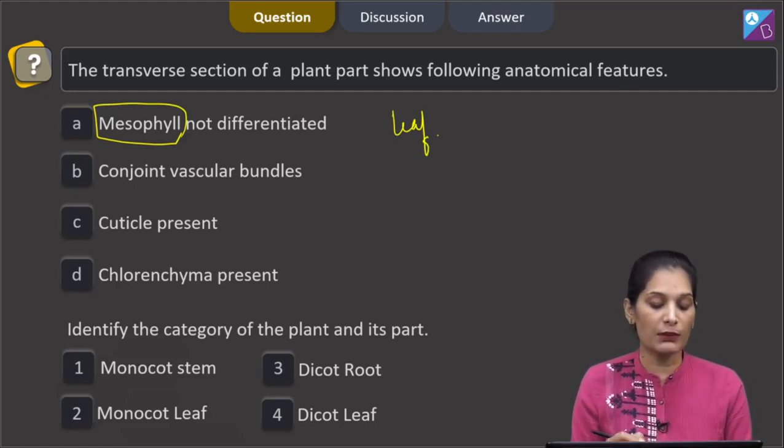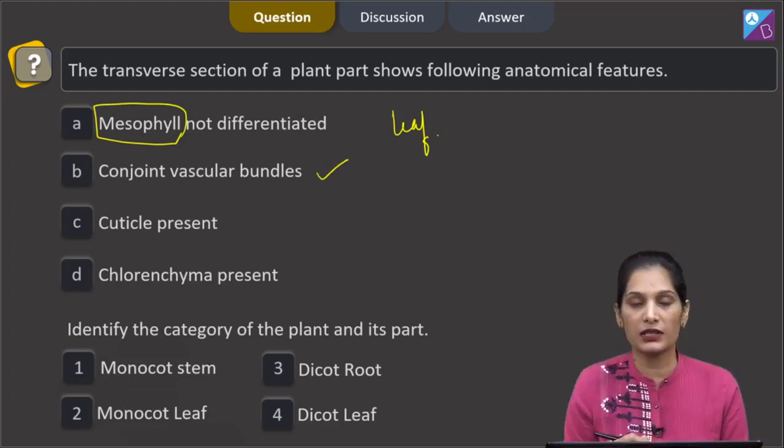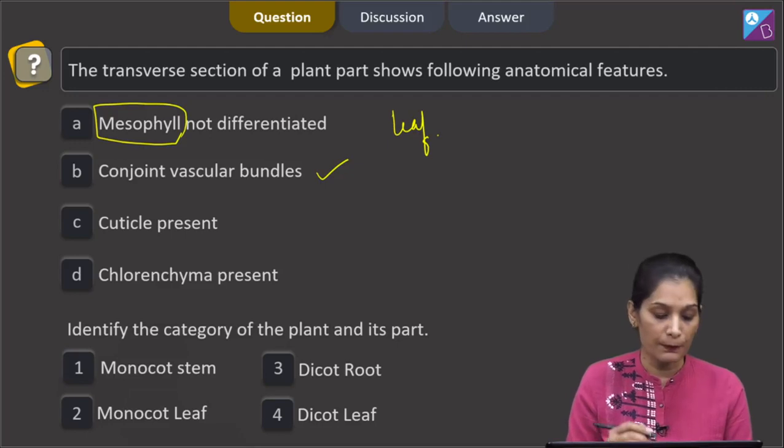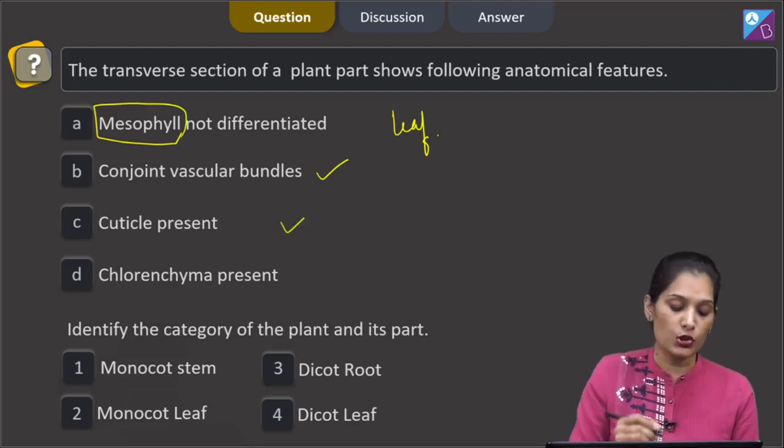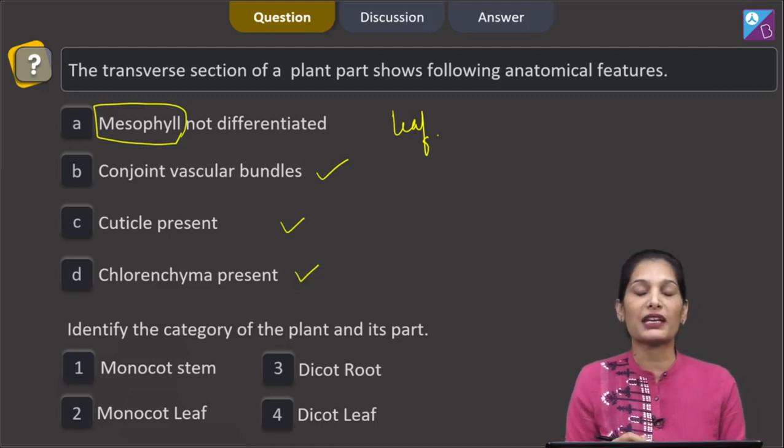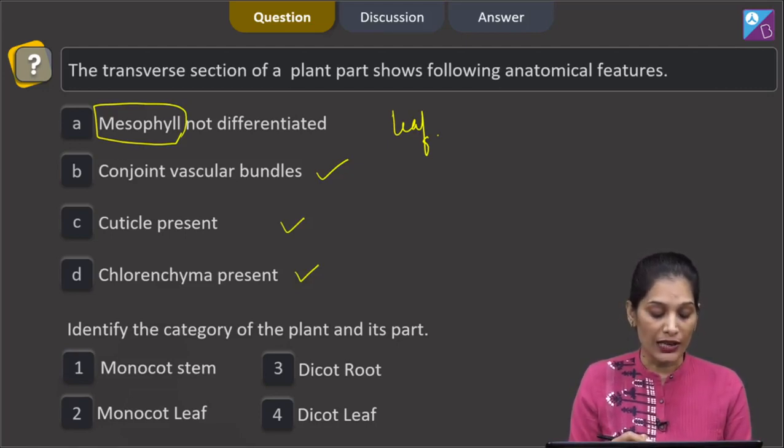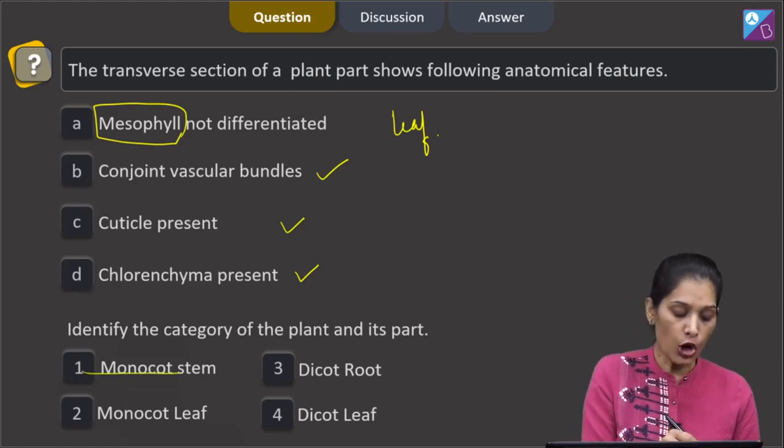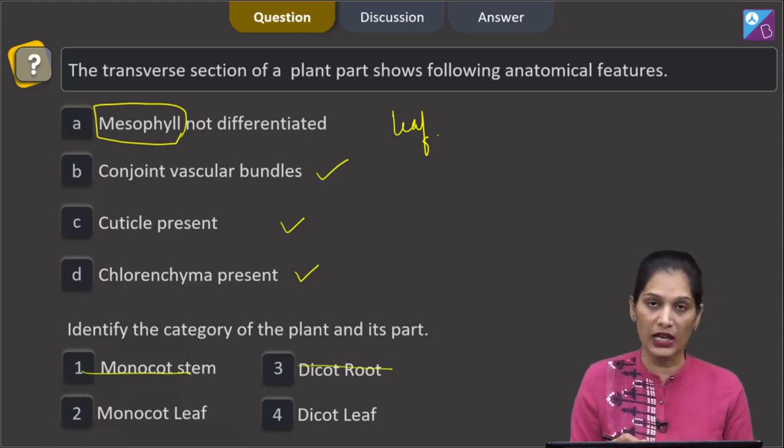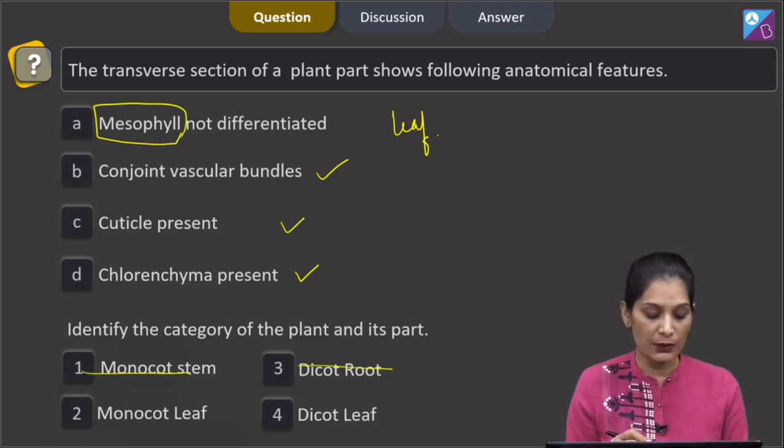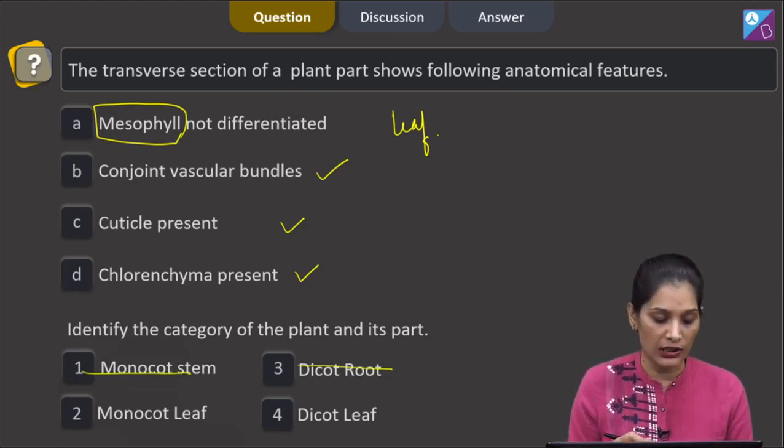In leaf, the vascular bundles are conjoint means the xylem and the phloem are present together. Cuticle present, true chlorenchyma present. Why chlorenchyma? Because the parenchyma contains chlorophyll for photosynthesis. So it is a structure of the leaf. Option number one and three are ruled out. Now, you have to differentiate between monocot leaf and the dicot leaf.